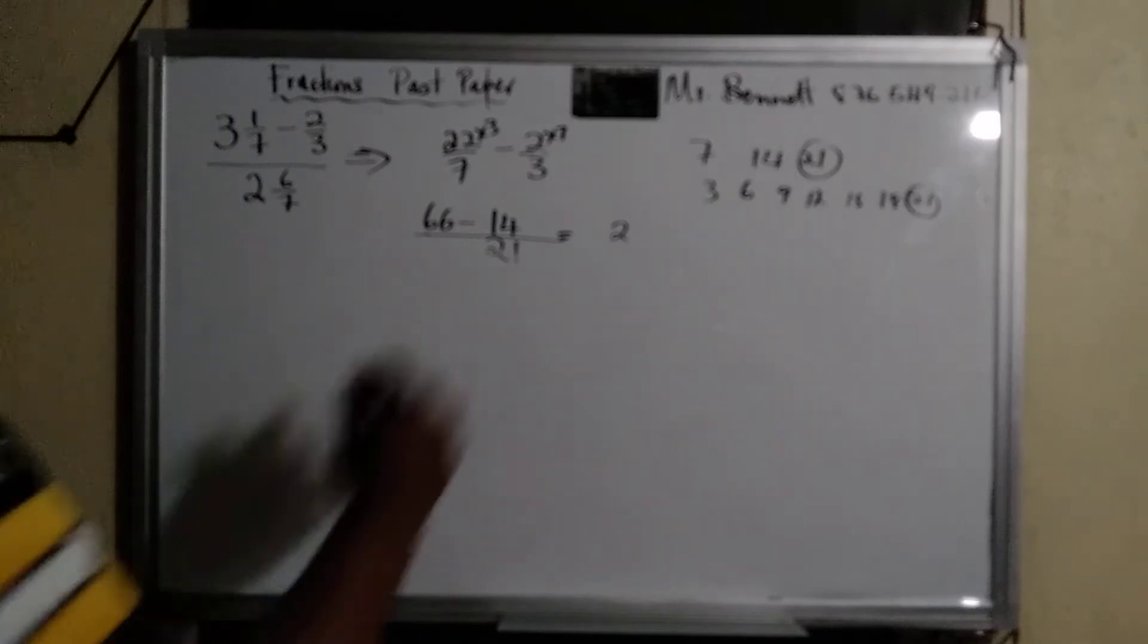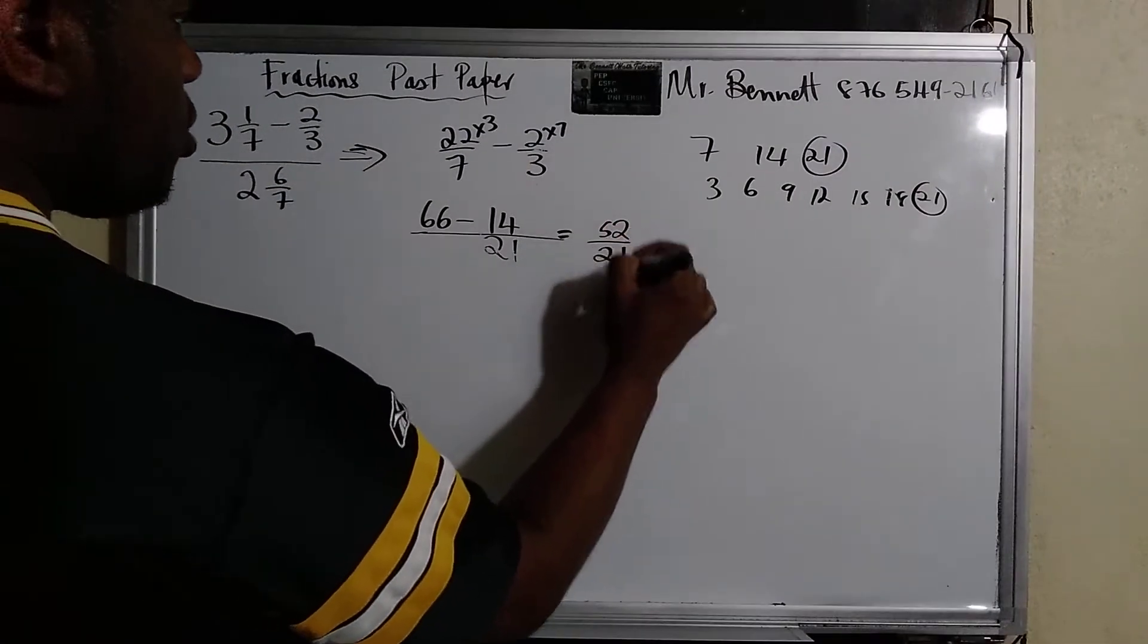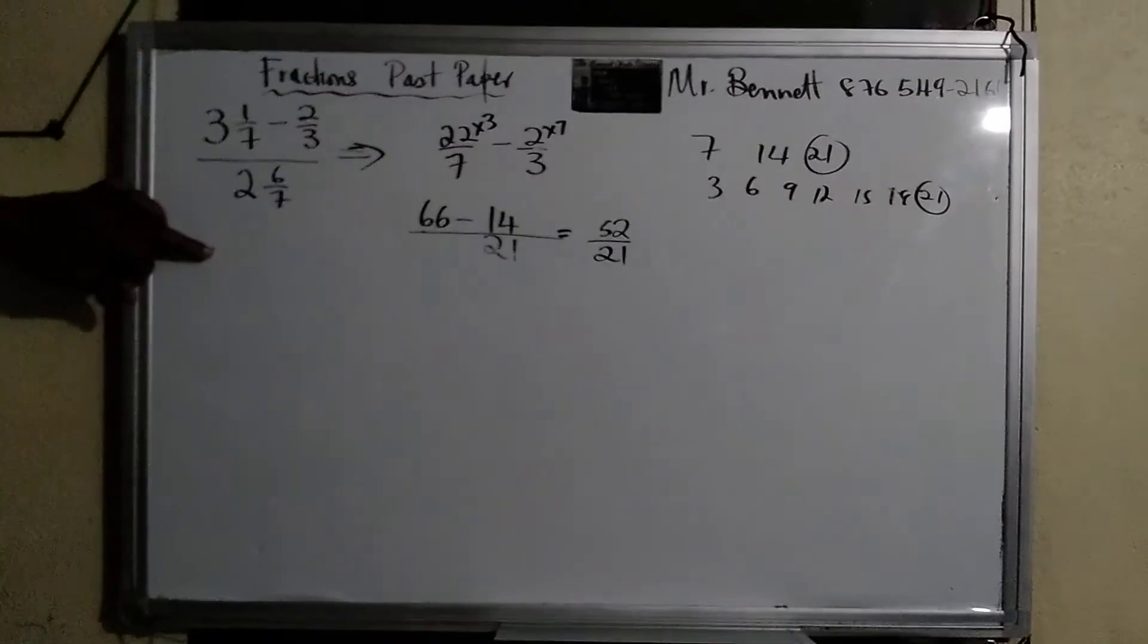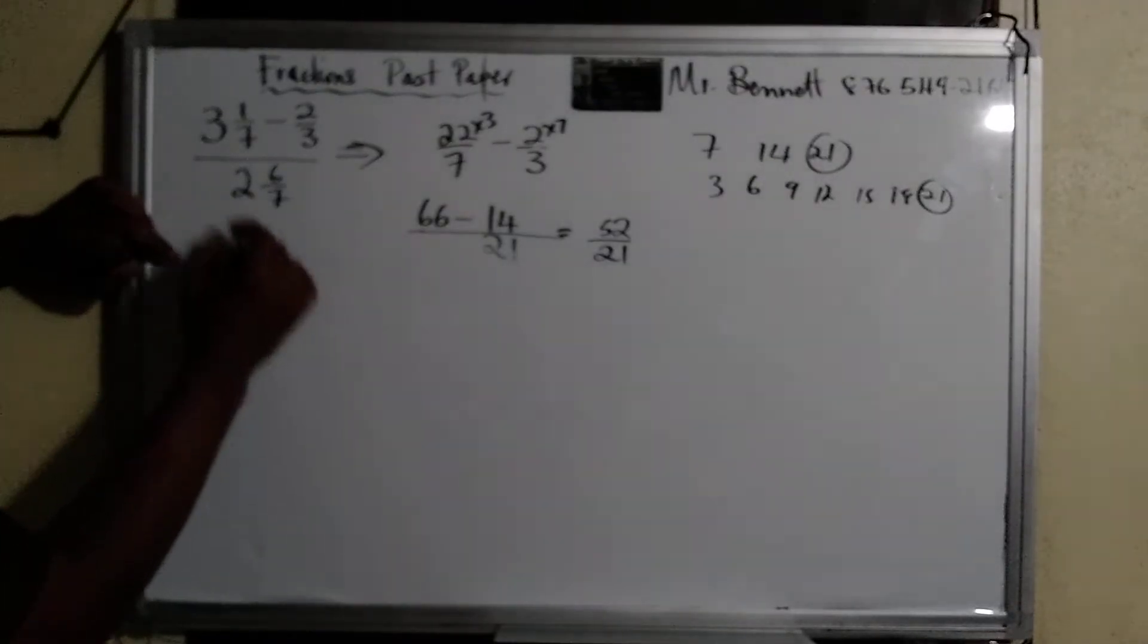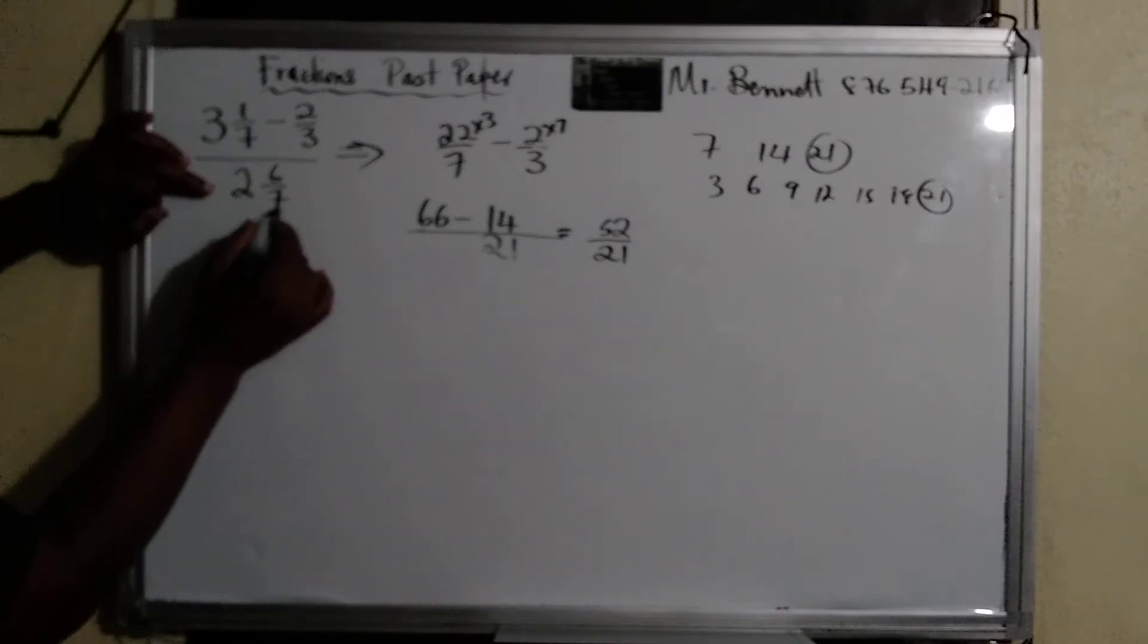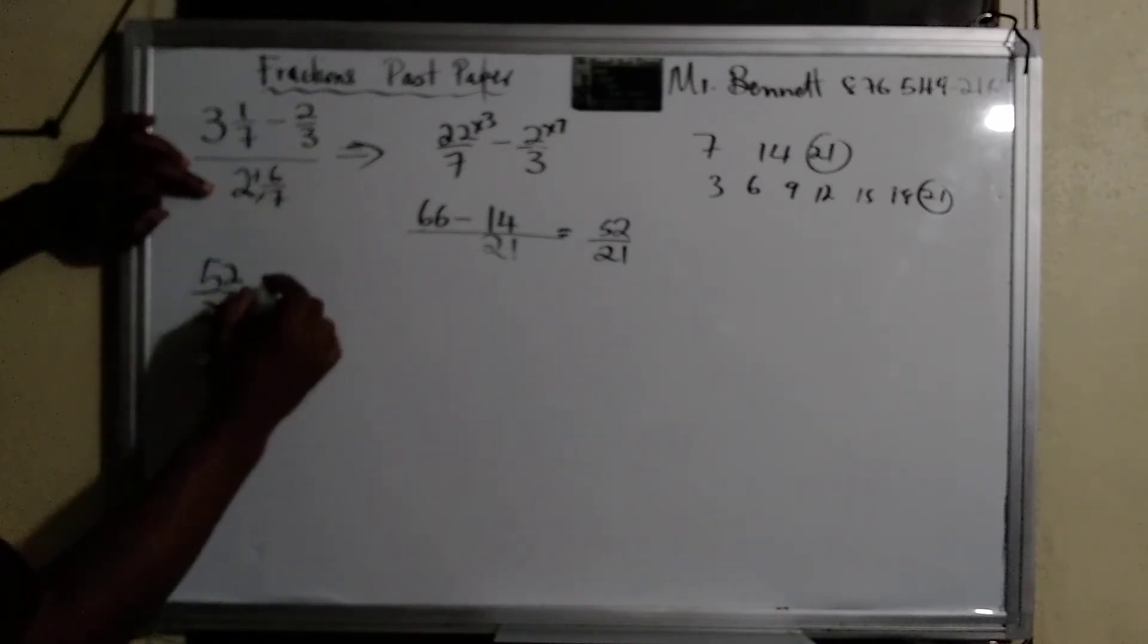Fifty-two over twenty-one. So now what we do is to divide fifty-two over twenty-one by this.